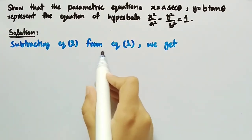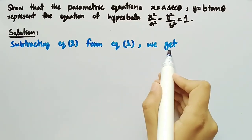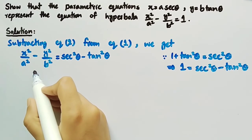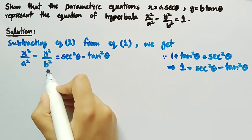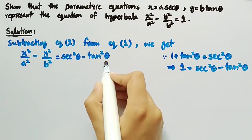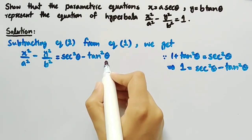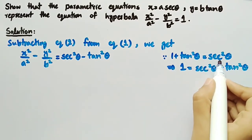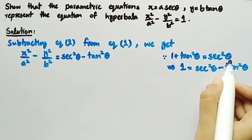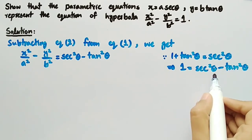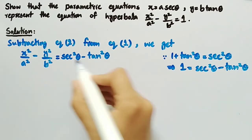Subtracting equation 2 from equation 1, we get x²/a² − y²/b² = sec²(θ) − tan²(θ). From trigonometric identities, we know that 1 + tan²(θ) = sec²(θ), which can also be written as 1 = sec²(θ) − tan²(θ).